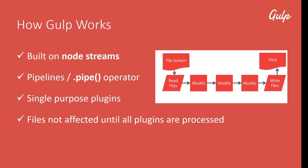Gulp is built on top of what are called node streams. A node stream is a continuous flow of data that can be manipulated asynchronously. These streams facilitate the connection of file operations through something called a pipeline. A pipeline is basically a chain of processing elements arranged so that the output of one element is the input of the next. We can set up single-purpose Gulp plugins to run task after task using the pipe operator. For example, one plugin could minify JavaScript files and then it'll be piped to the next one, which could compile Sass files down to regular CSS.